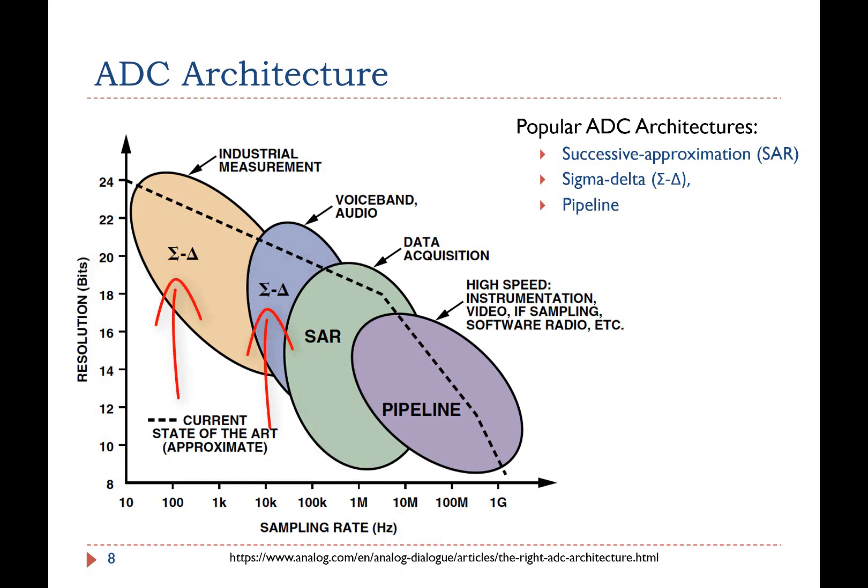Sigma-Delta converters offer the best resolution, but they are mostly for low-speed applications. Pipeline converters offer very high sampling rates, up to hundreds of mega samples per second. They are often used in high-speed instrumentations.